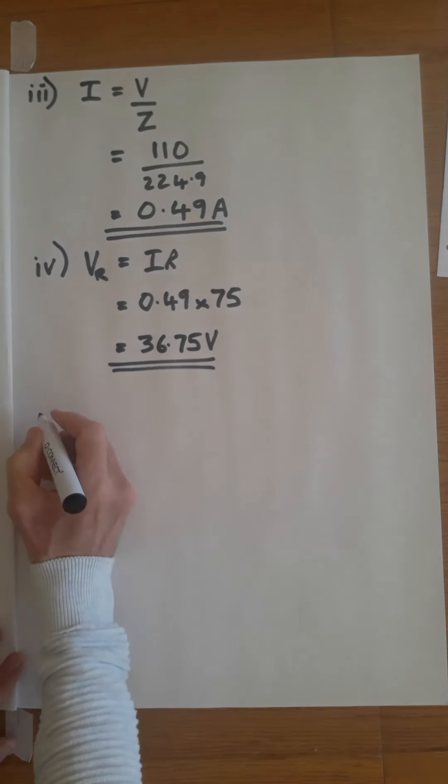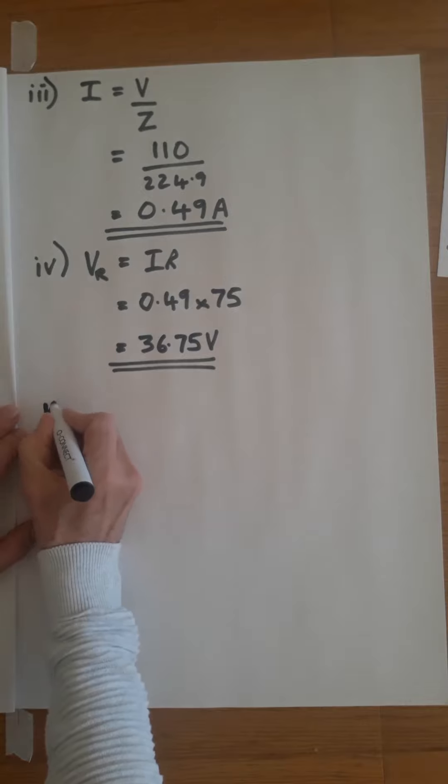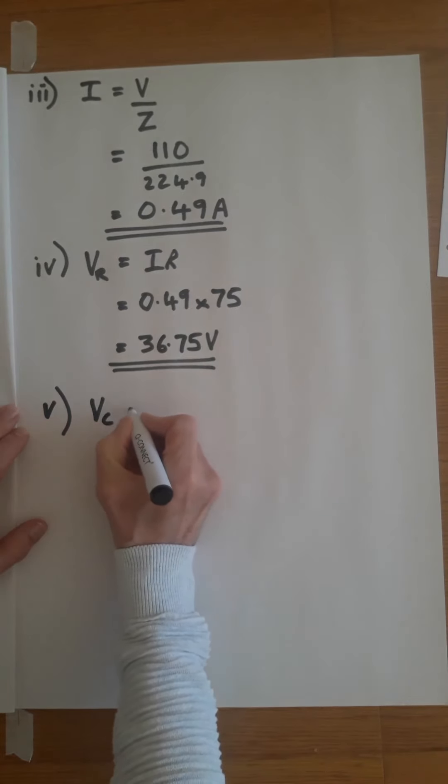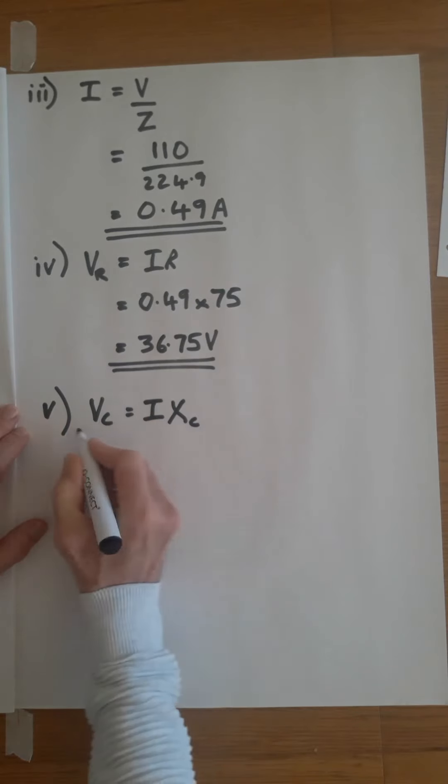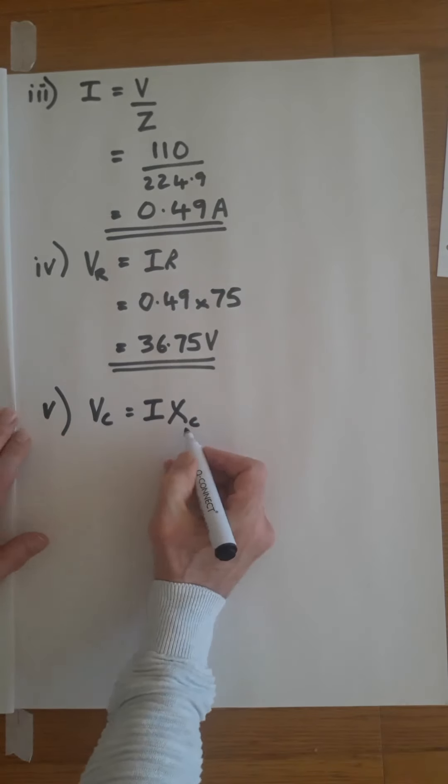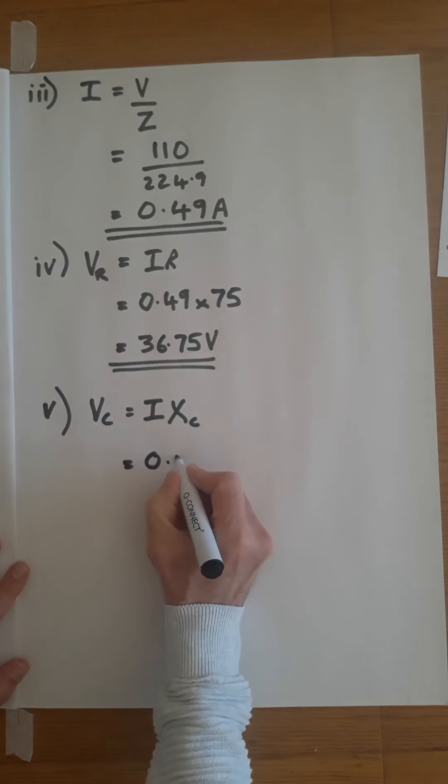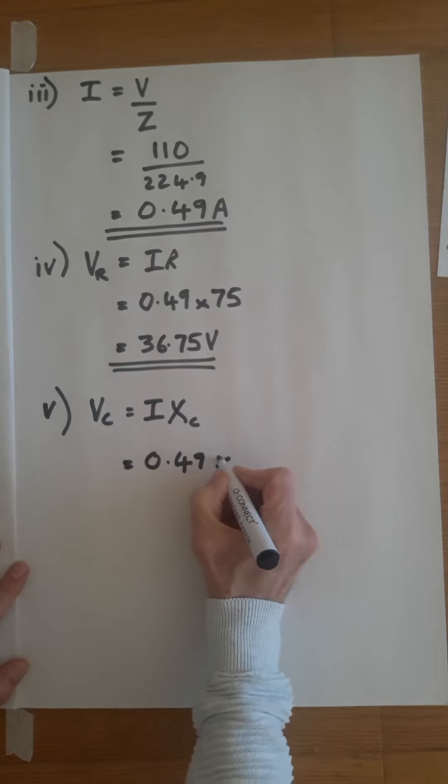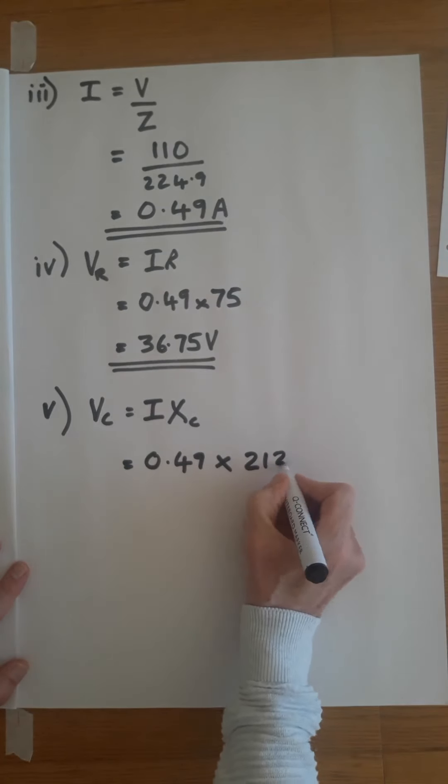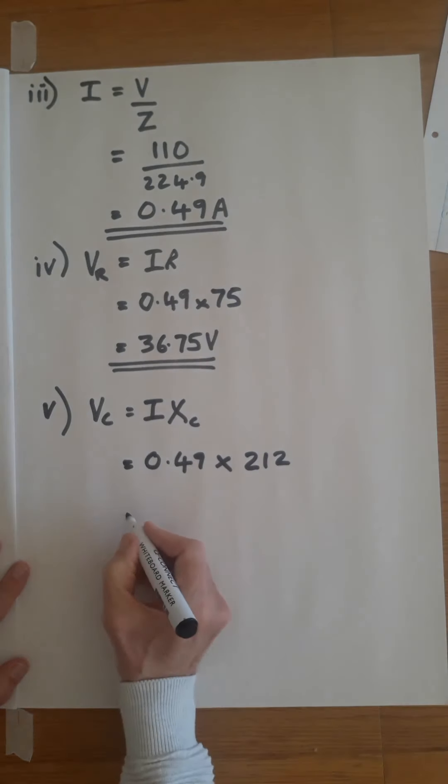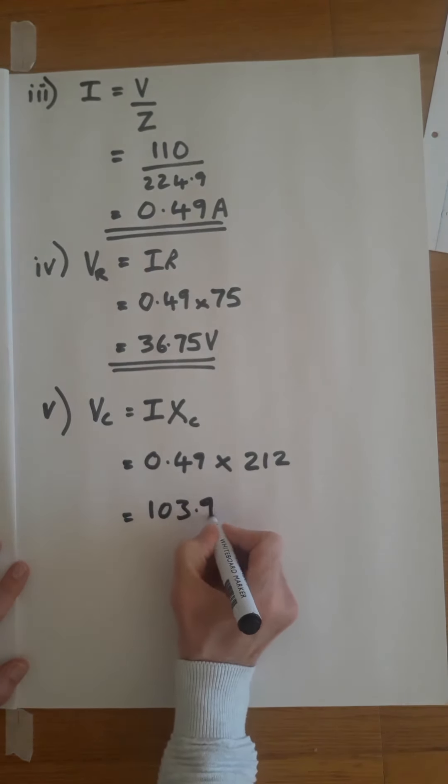Part 5, the voltage across the capacitor. Vc equals I times Xc. Still Ohm's law, just using Xc instead of R. Put the numbers in: 0.49 times Xc, which was 212, and that comes to 103.9 volts.